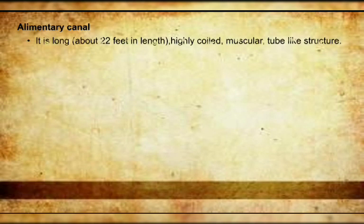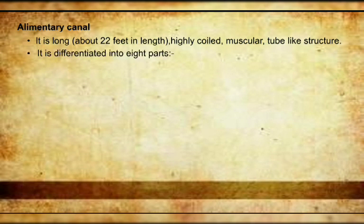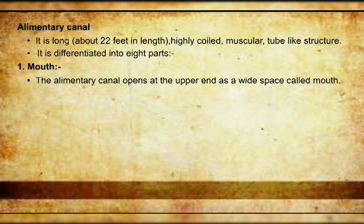The alimentary canal is about 22 feet in length and is called a muscular tube. It consists of eight parts. Number one is the mouth — the opening of the alimentary canal. Number two is the buccal cavity — the cavity present in our mouth. Inside the buccal cavity, there are two palates: the upper side is called the hard palate and the lower side is called the soft palate.